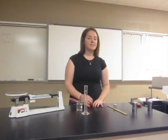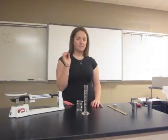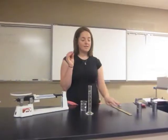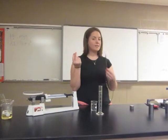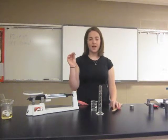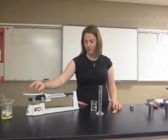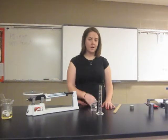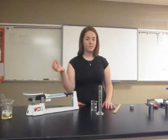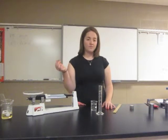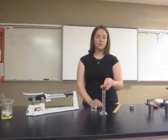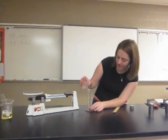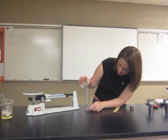What if you want to find the density of an irregular shaped object such as a marble? You can't easily measure it with a ruler, so we need another method. You can still find the mass of the marble by placing it on the scale — record it on your paper. To find the volume, we are going to use a graduated cylinder. Pour some water into the graduated cylinder and stop at a level even with the line.